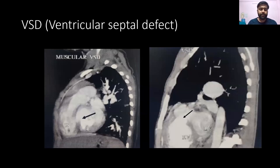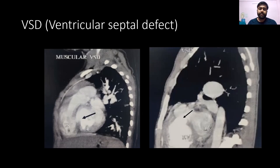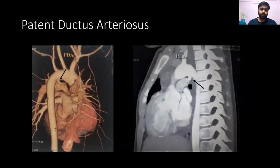Similarly, here we can see the defect between the two ventricles, right and left. The first image depicts a muscular VSD, and the second one depicts a defect more toward the outflow tract — this is a perimembranous VSD.